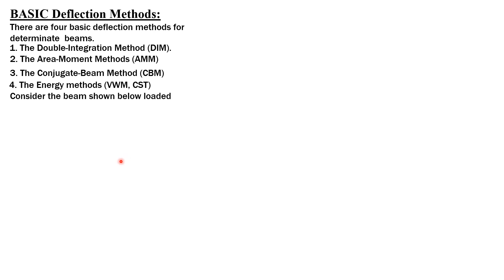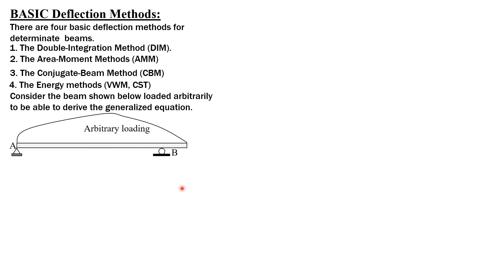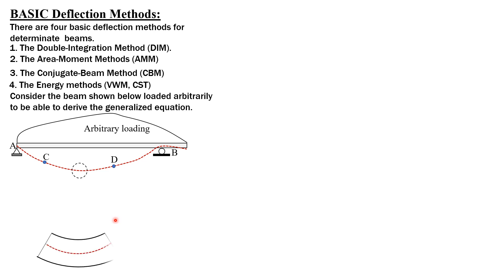Let's consider a beam loaded with an arbitrary loading to generalize the derivation of the double integration equation. With this loading, the beam will deflect and the elastic curve will appear as shown — this is highly exaggerated because the actual beam appears straight to the naked eye, but this form is used for the purpose of derivation. We consider two points C and D on the elastic curve, and a very small element of this elastic curve.